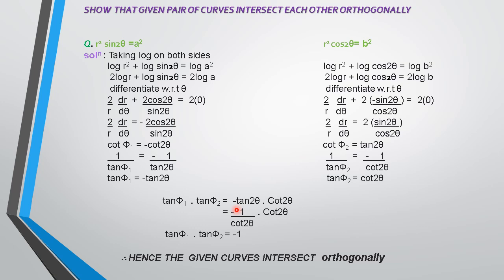To prove the curves intersect each other orthogonally, we must show that tan ψ₁ × tan ψ₂ = −1. Substituting the values: tan ψ₁ × tan ψ₂ = (−tan2θ) × (cot2θ). Since tan2θ = 1/cot2θ, tan2θ and cot2θ cancel, leaving −1. Hence it is proved that the given curves intersect orthogonally.